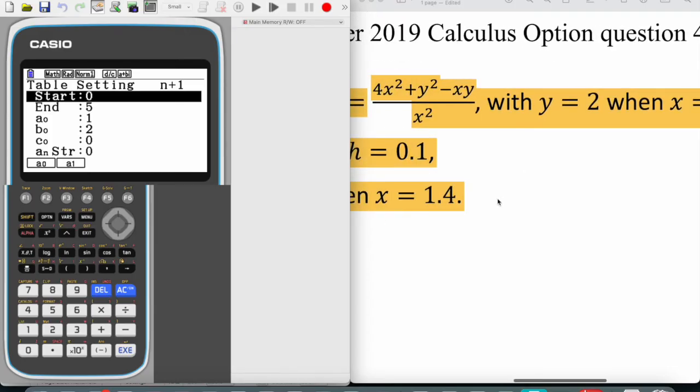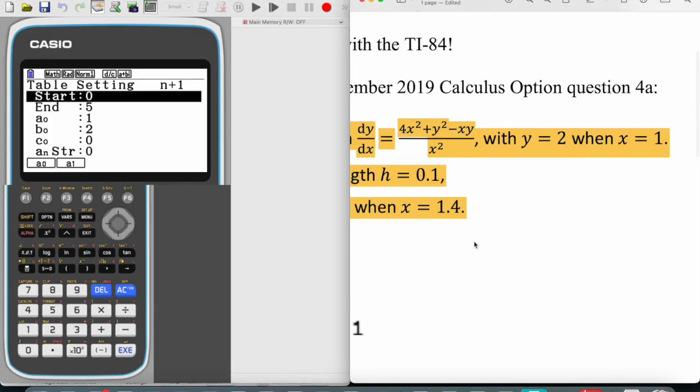We know that to go from x equals 1 to 1.4 we need to do the calculations, we need five rows of calculations, or four rows after the first starting point. We're going to be getting the values of 1.1, 1.2, 1.3, and 1.4, so we need to specify that.